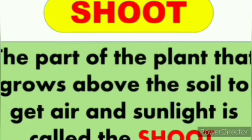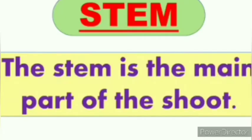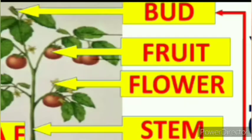The part of the plant that is above the ground is called the shoot. The shoot comprises many parts like stem, flowers, leaves, buds, fruit, etc. Today we will discuss only the stem. Stem is the main part of the shoot — it bears leaves, branches, flowers, and fruits.